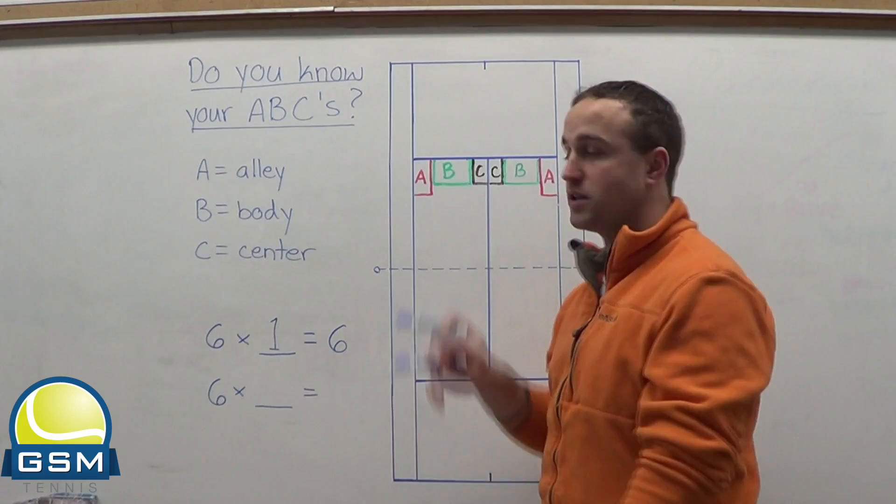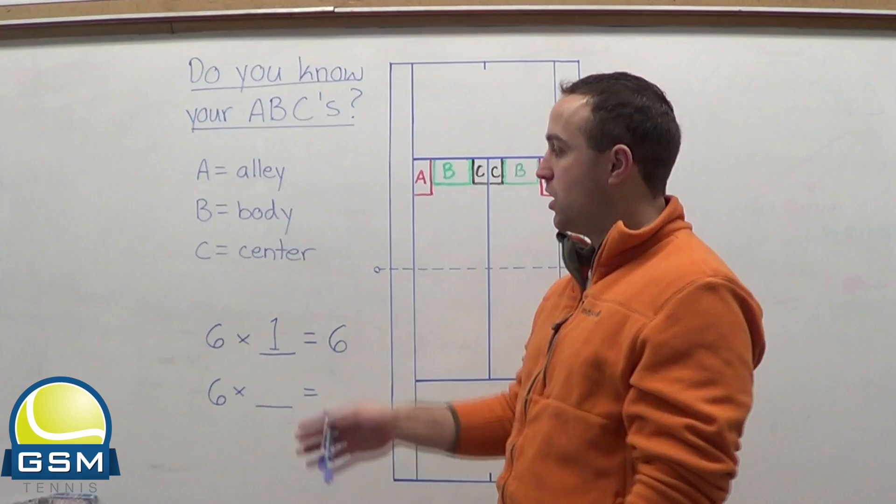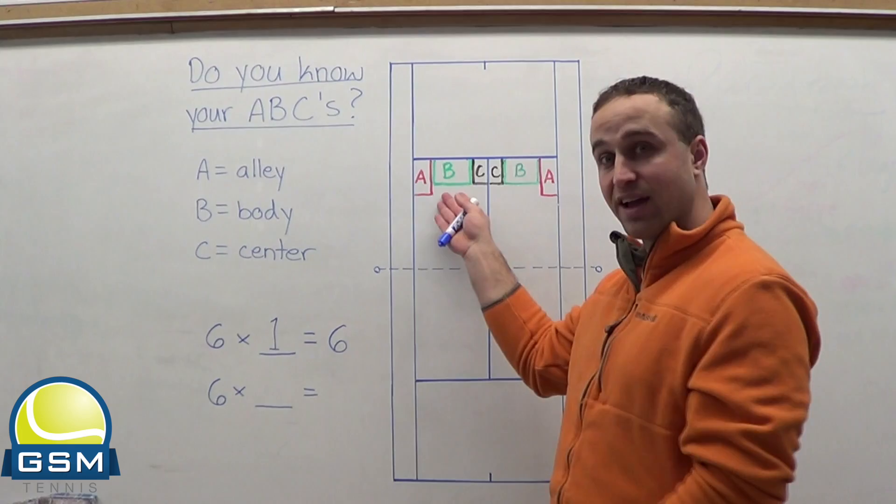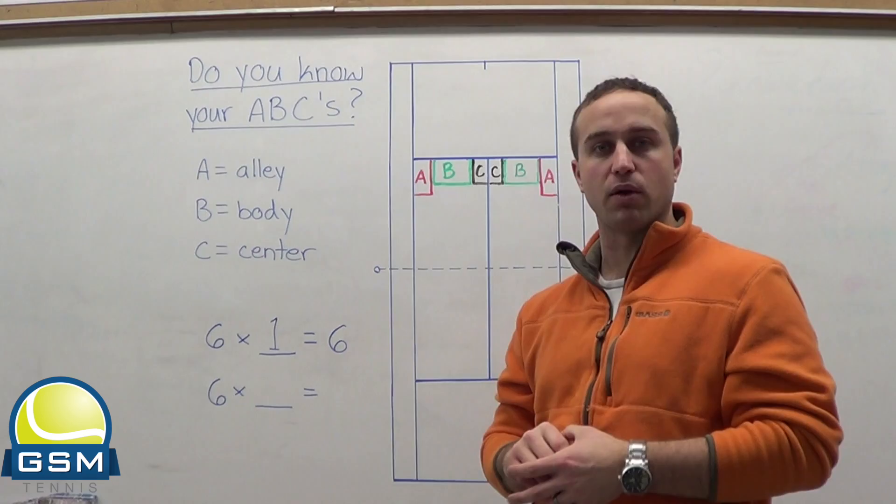And your opponent will never know what's going on. So even just with one serve, you have six possibilities. Three on this side and three on this side. You can easily confuse your opponent.